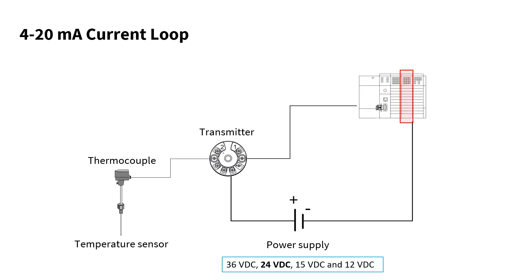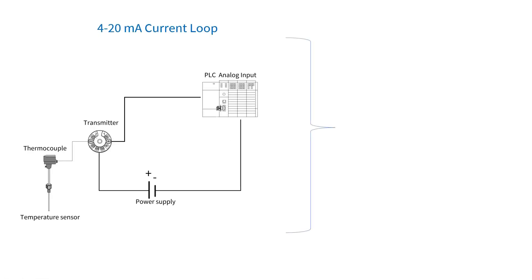Finally, a receiver reads the current loop — in this example I have an analog input module. The reading gets measured from the thermocouple, the transmitter converts that to current, and then we can read that using the PLC analog input. Each element in the loop has a voltage drop, but because we're using the 4 to 20 milliamps current loop, the current produced by the transmitter remains the same throughout the loop.